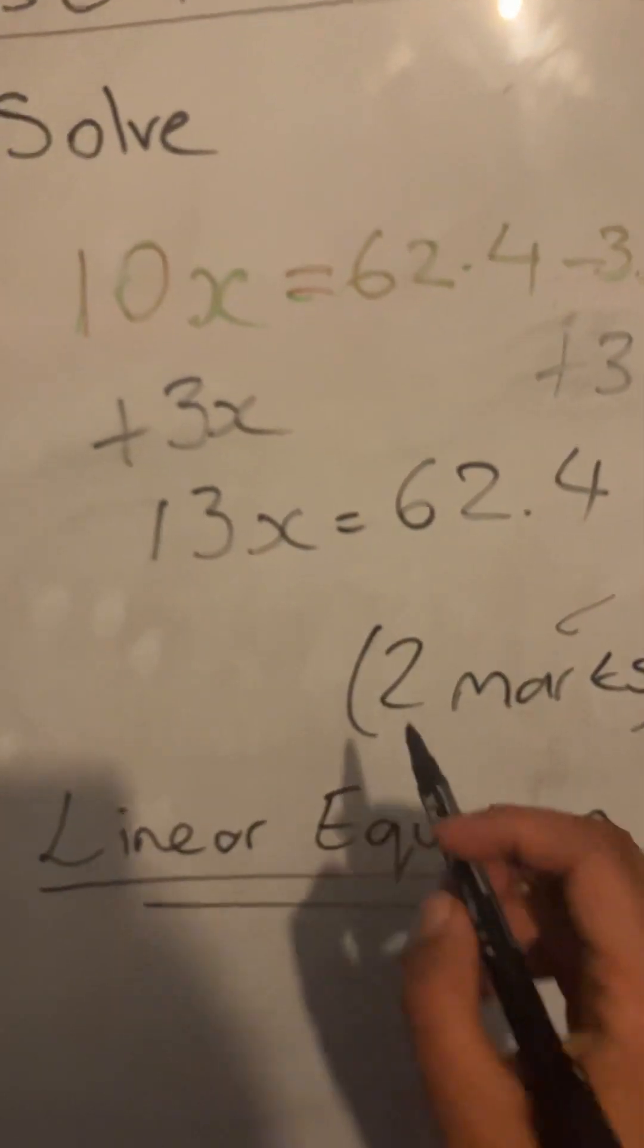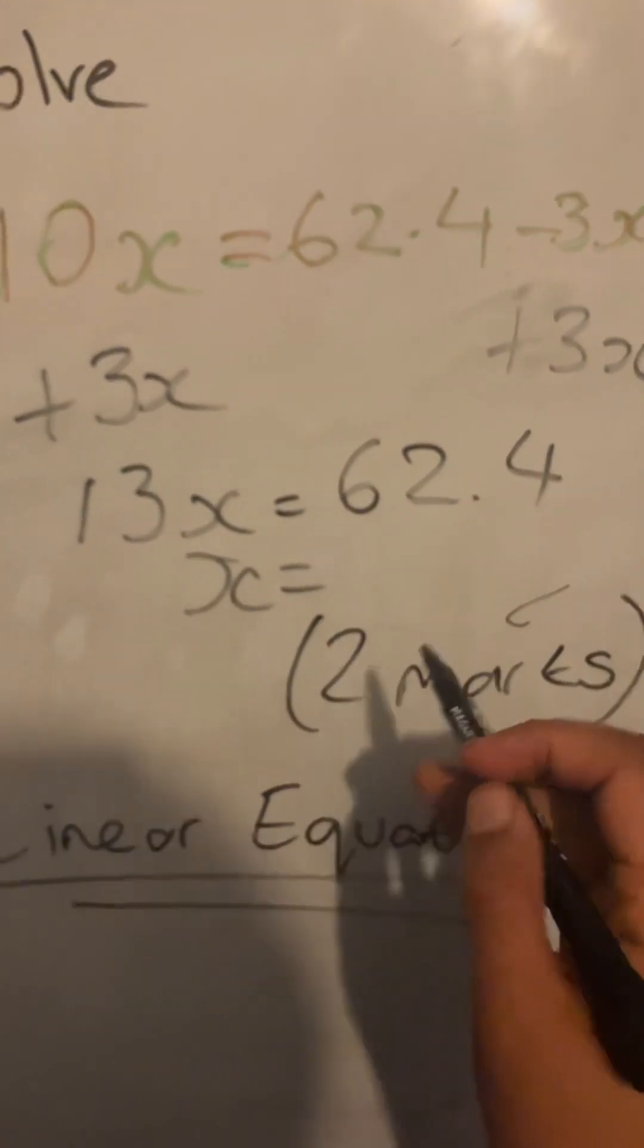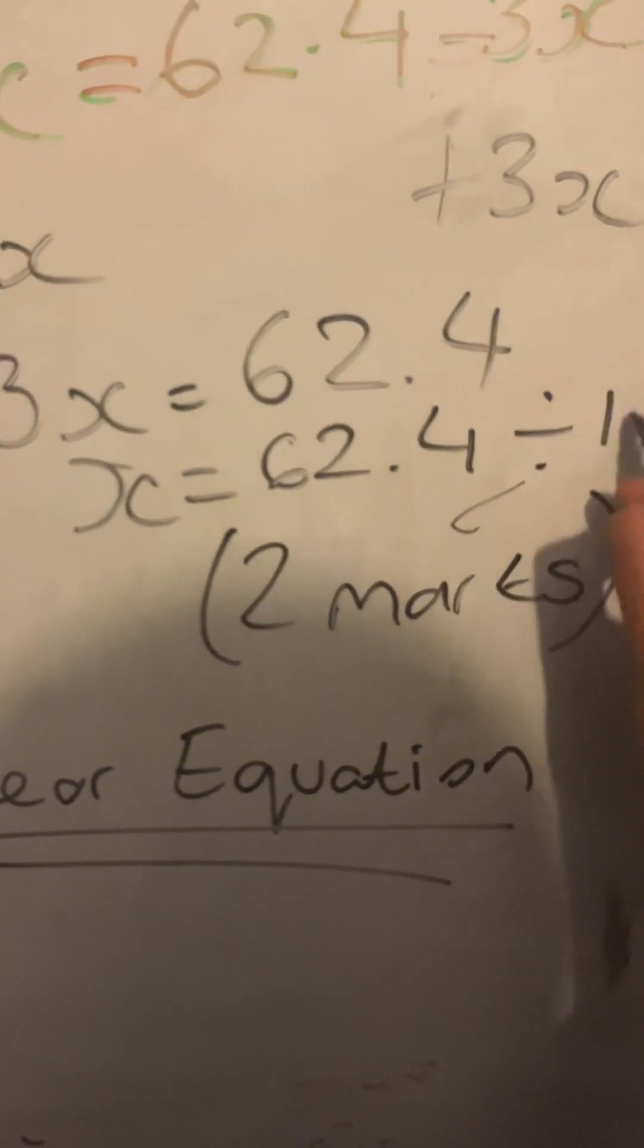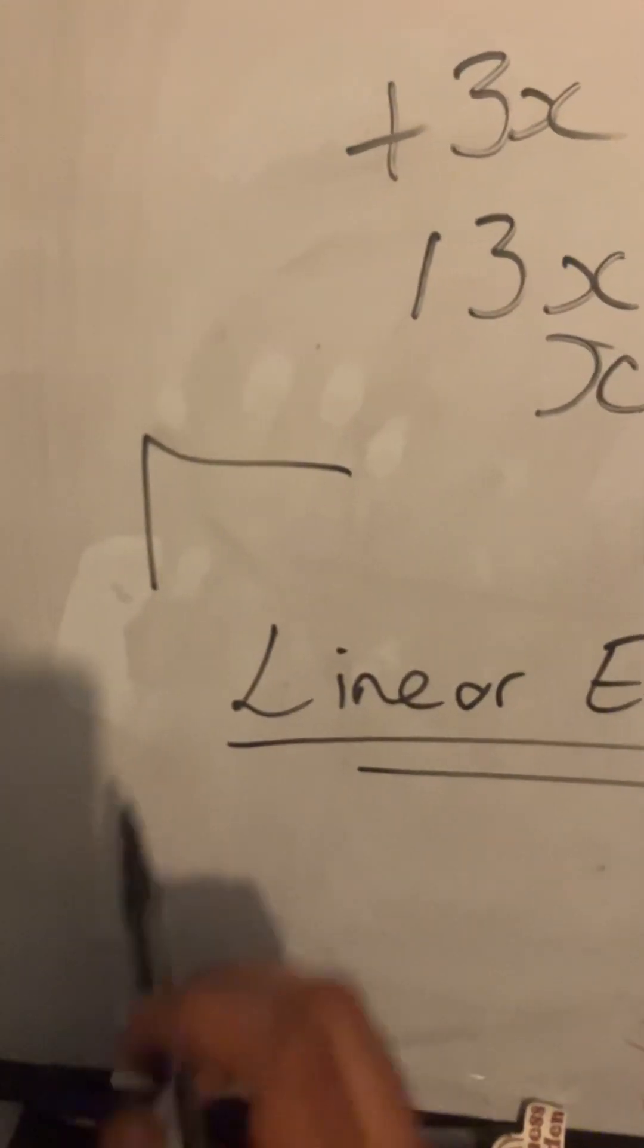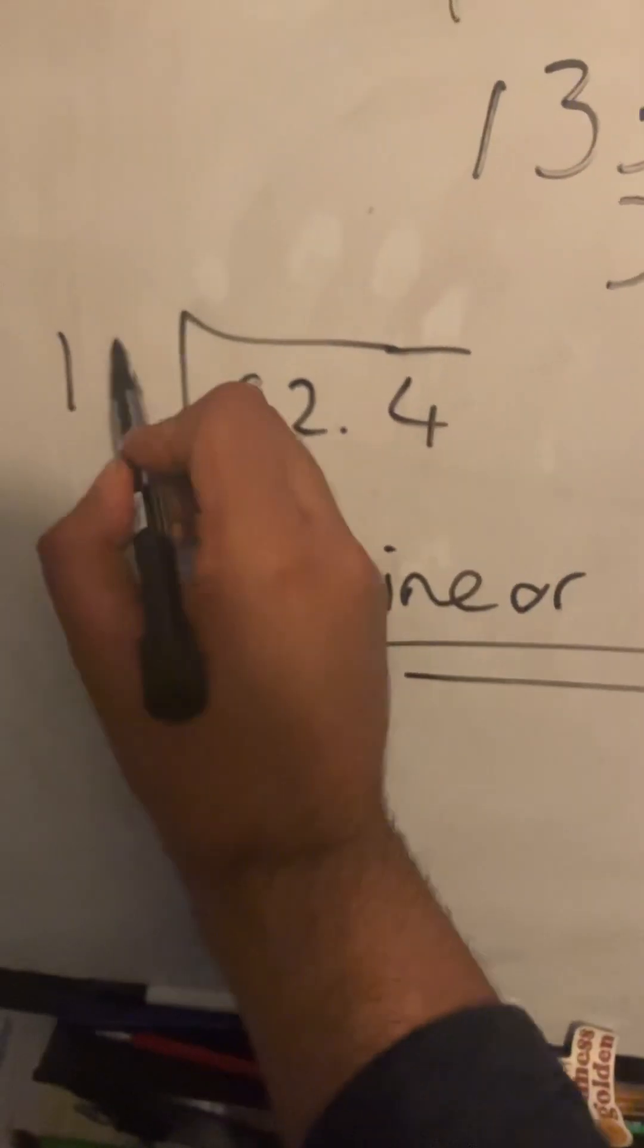Now I want to get x by itself, so I'm going to divide both sides through by 13. So doing that gets me my value of x. Working this out to the side or with your calculator, 62.4 divided by 13.